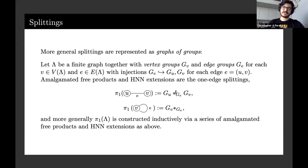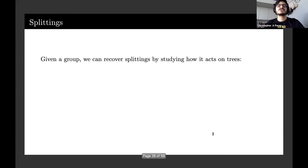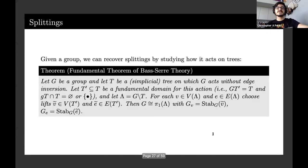If we have a loop, we do an HNN extension. More generally, for larger graphs, the pi one of lambda will be constructed inductively by a series of amalgamated free products and HNN extensions. Given a group, we can actually recover splittings of that group by studying how it acts on trees. By studying these actions on trees, there's been interesting work into trying to find a canonical splitting for a group, and this led to the theory of JSJ splittings.